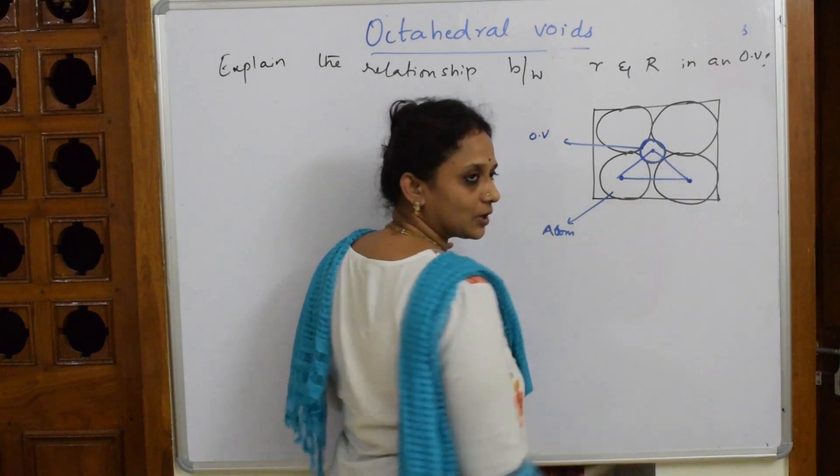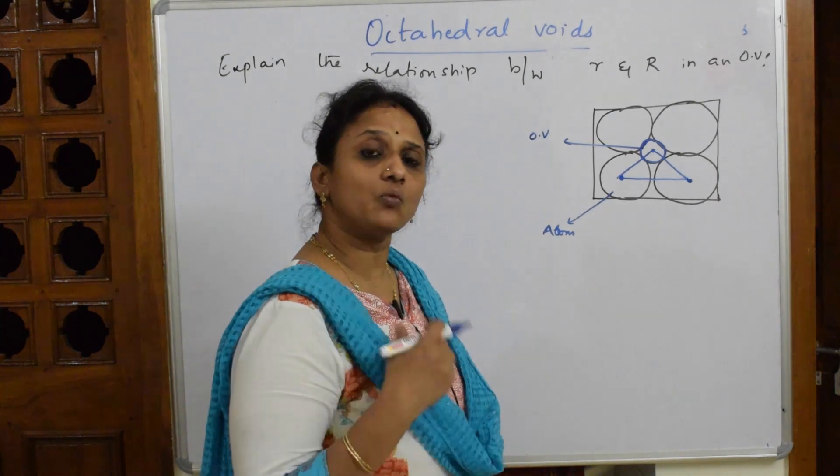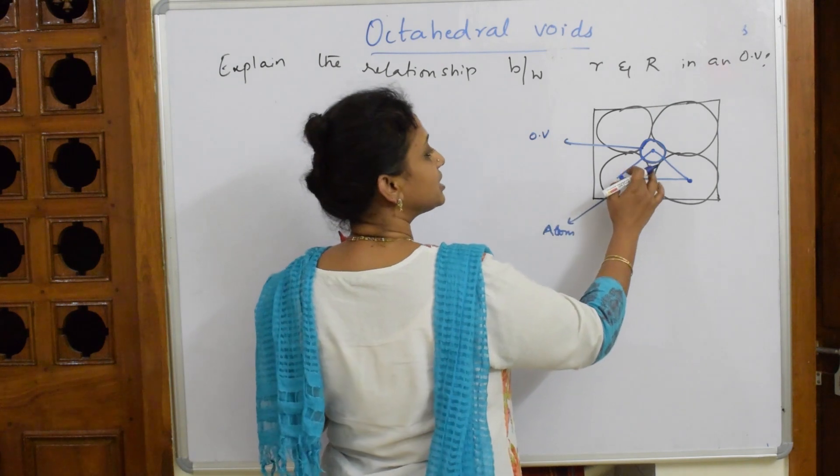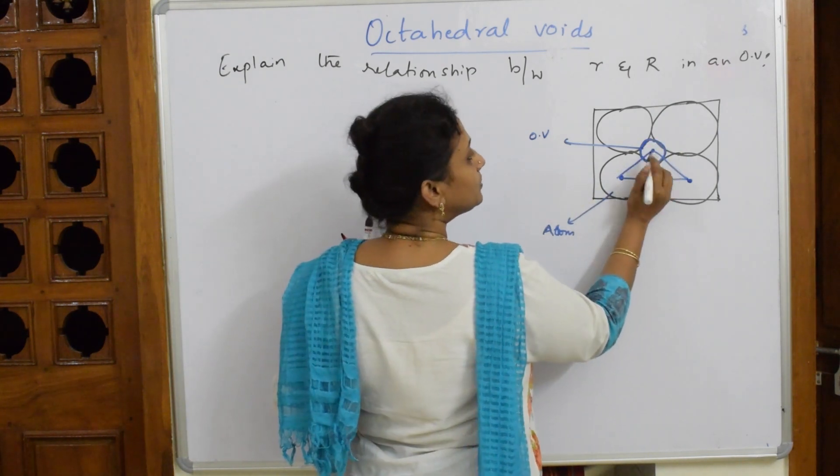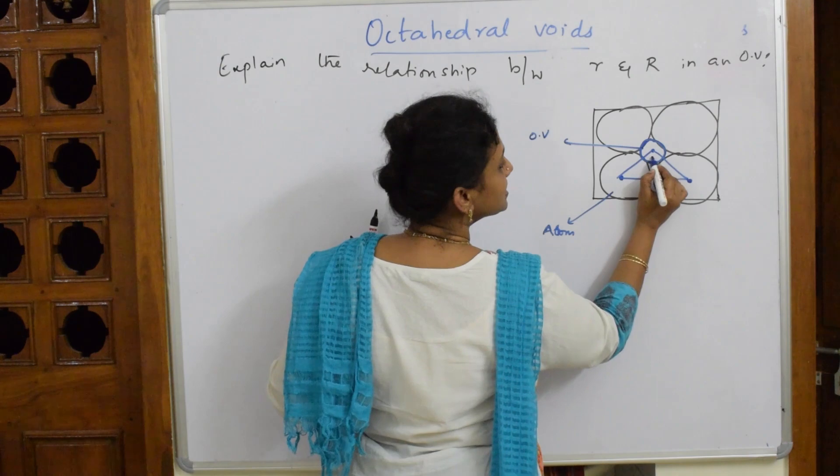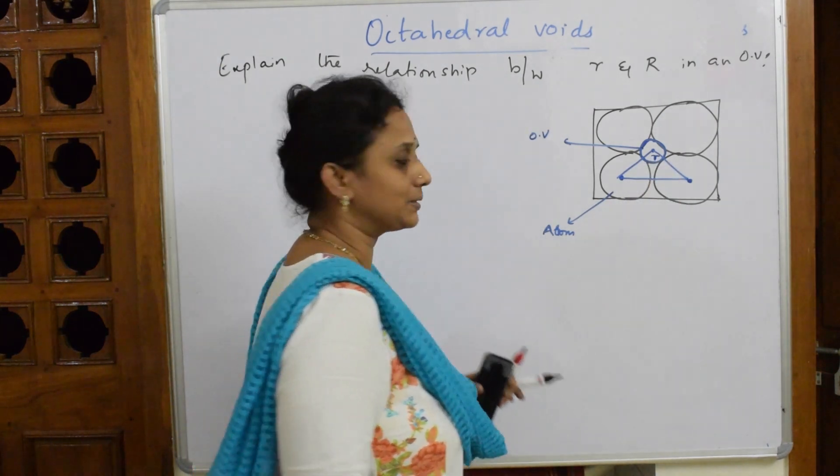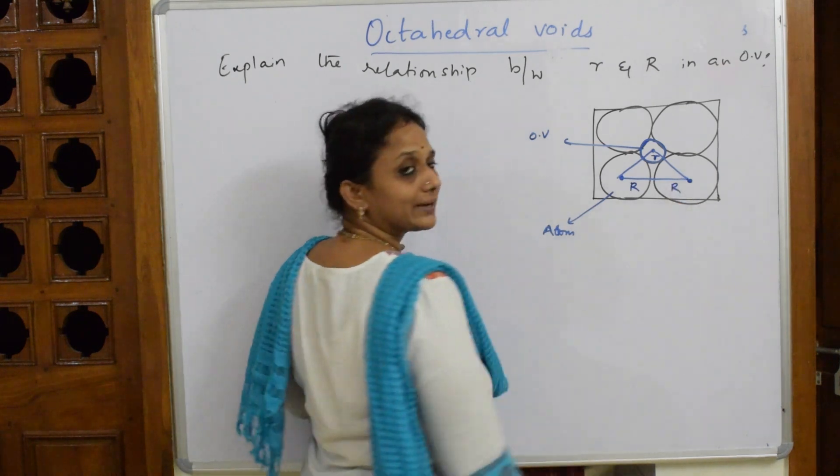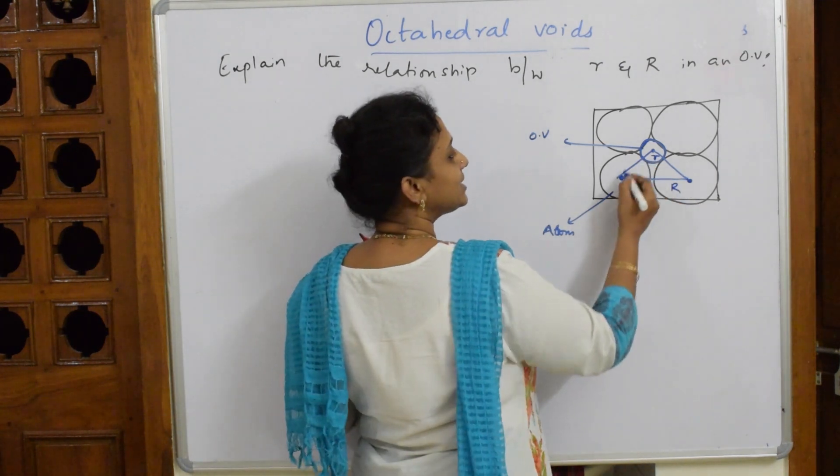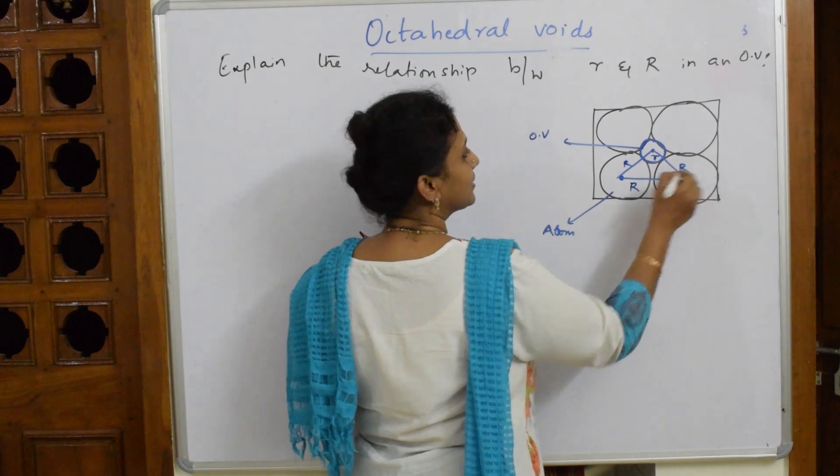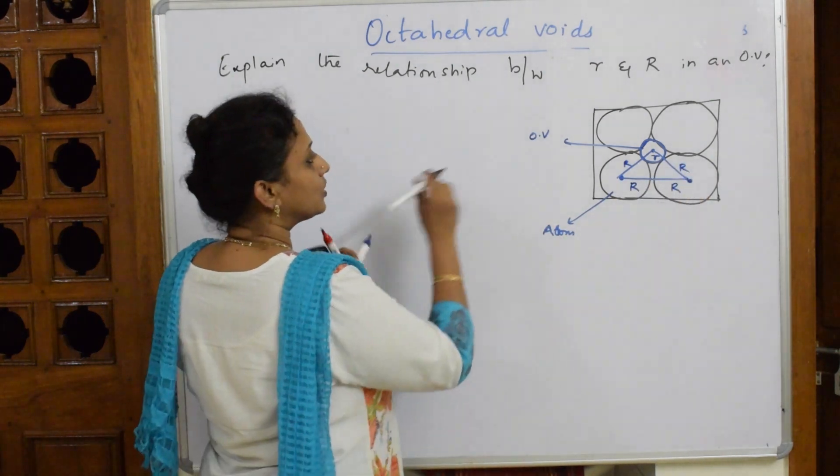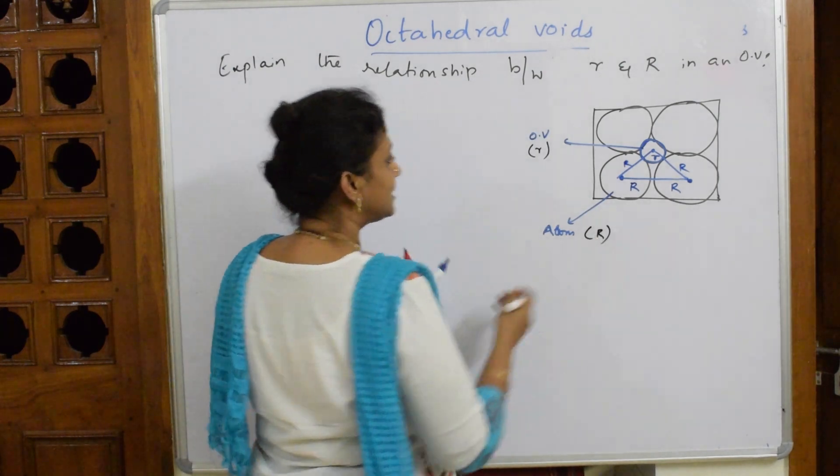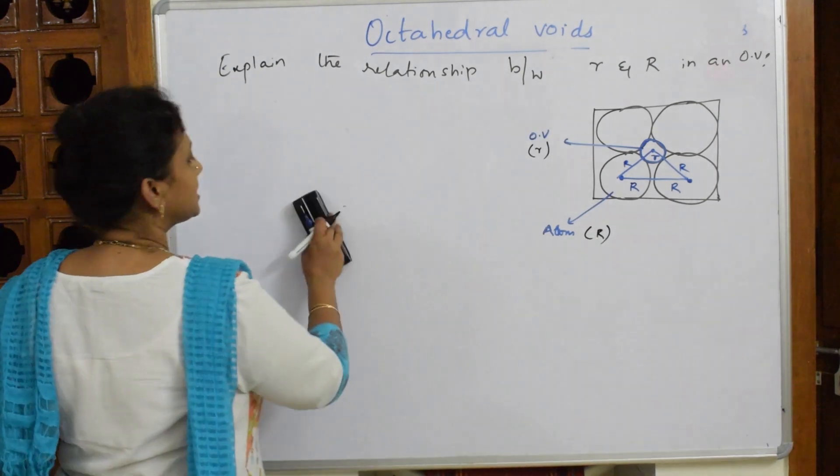Now what you're going to do is join this point, this one, and this - these three lines. To differentiate between a void and a sphere, you're going to pick up this radius as small r. For the atom, you're going to pick it as capital R. Remember, octahedral void you're going to mention as small r, and for the atom you're going to mention as capital R. Now let us start with the derivation.